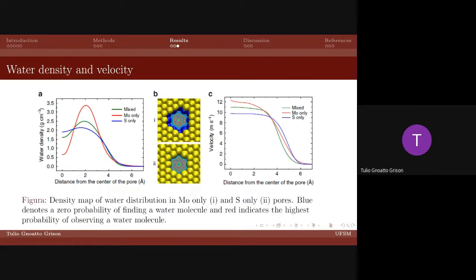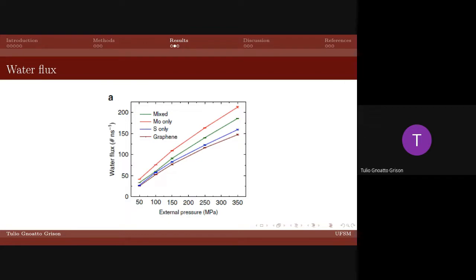All results indicate that the molybdenum only edge has the highest rate of water permeation followed by the mixed, sulfur only, and graphene pore for all the applied pressures. We can see in this graph that the water flux from the mixed pore is intermediary between molybdenum only and sulfur only nanopores.